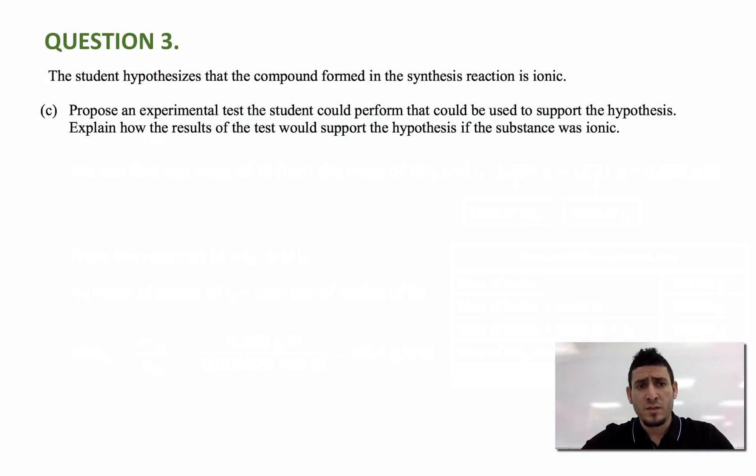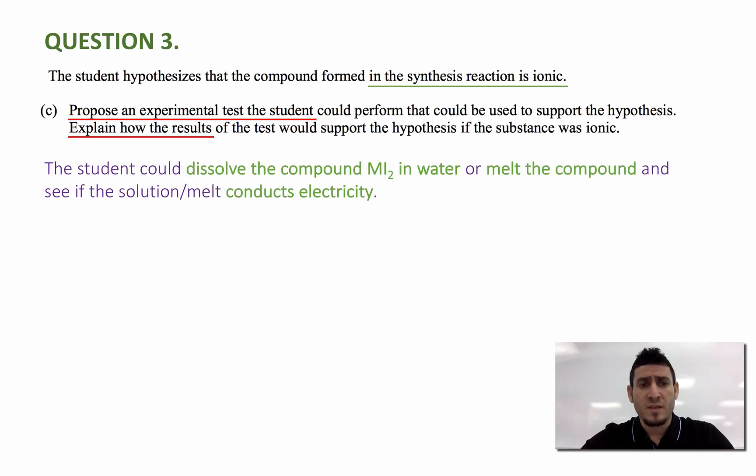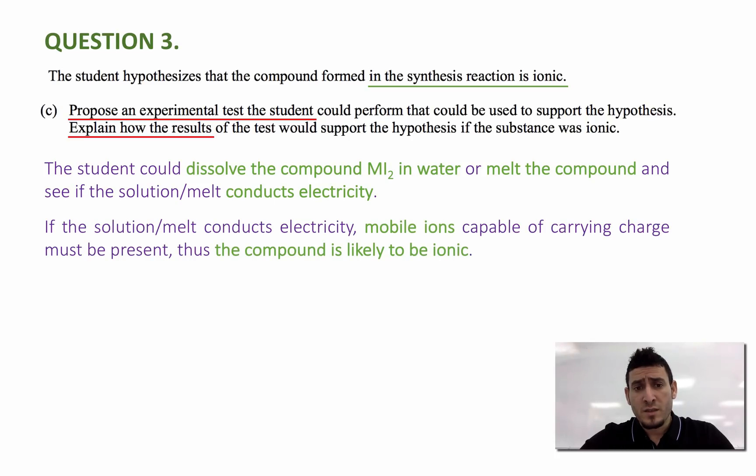The next question says, the student hypothesizes that the compound formed in the synthesis reaction is ionic. The question is, propose an experimental test the student could perform that could be used to support the hypothesis. Explain how the results of the test would support the hypothesis if the substance was ionic. We can simply say that the student could dissolve the compound MI2 in water or could heat it until that it melts and see if the solution or the melt conducts electricity. Because if the solution conducts electricity, it means that mobile ions capable of carrying charge must be present. Thus, if ions exist, therefore the compound is likely to be ionic.